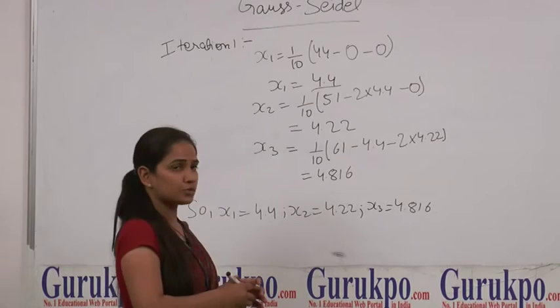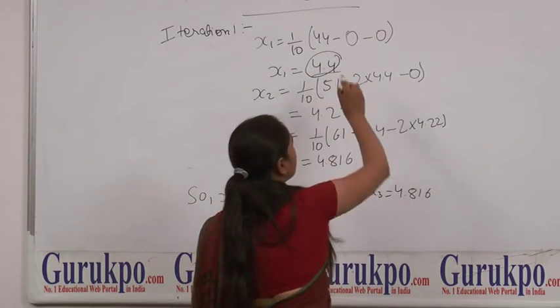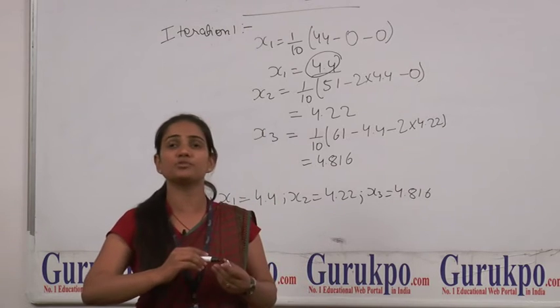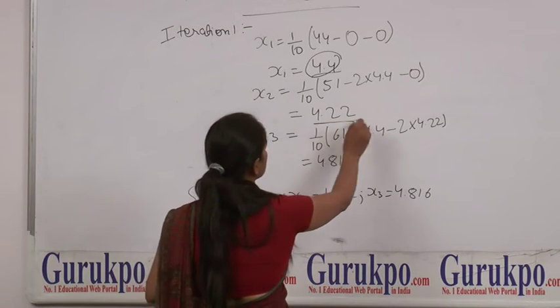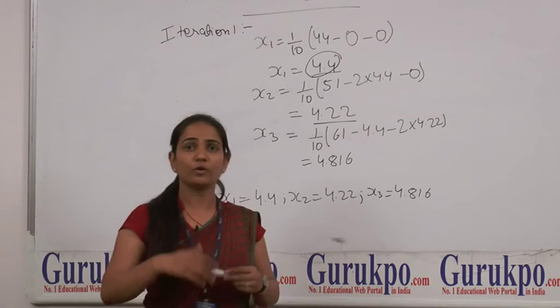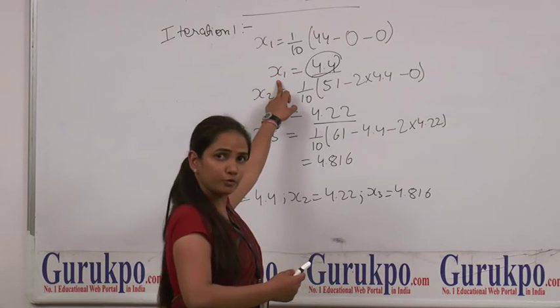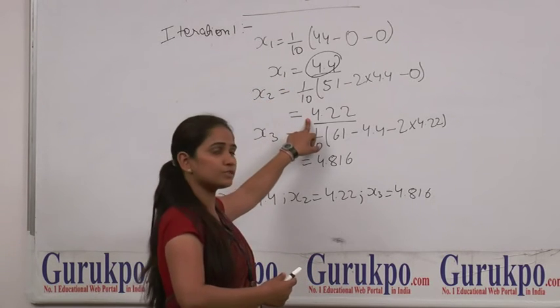Now, to find out x2, we will have x1 as 4.4 and we will take x3 equals 0. In this way, we will find out our x2, and to find out x3, we have all our variables: x1 equals 4.4, x2 equals 4.22.